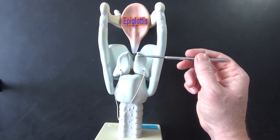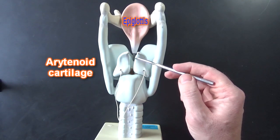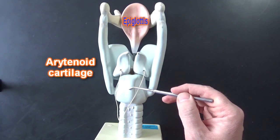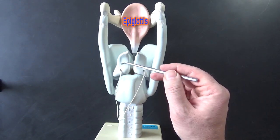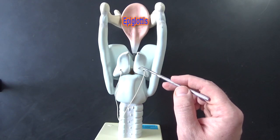Here we have the arytenoid cartilages. The arytenoid cartilages are kind of triangular shaped and they sit on top of the cricoid cartilage. These arytenoid cartilages we're going to see are where the vocal cords attach.